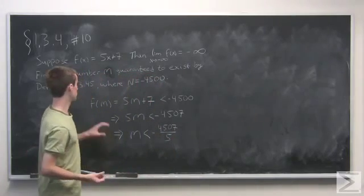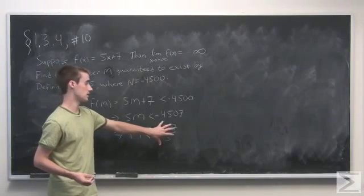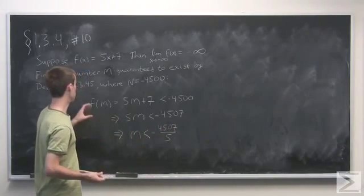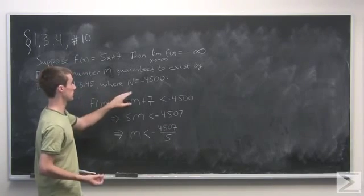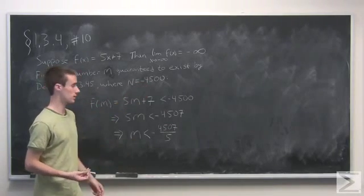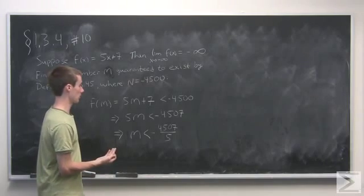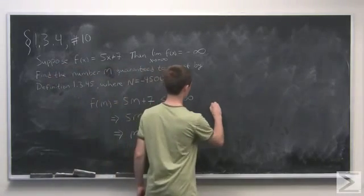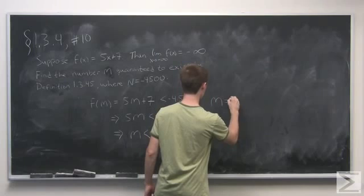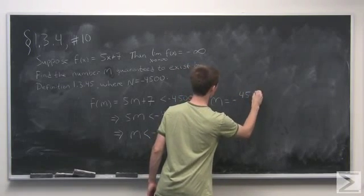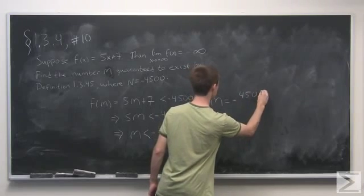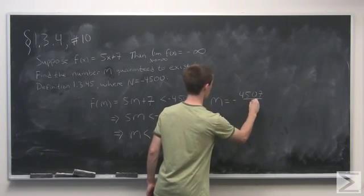Now, this says that for any value that we choose that's less than this number, we're going to end up with an output that's less than negative 4500. So our m value then is negative 4507 over 5.